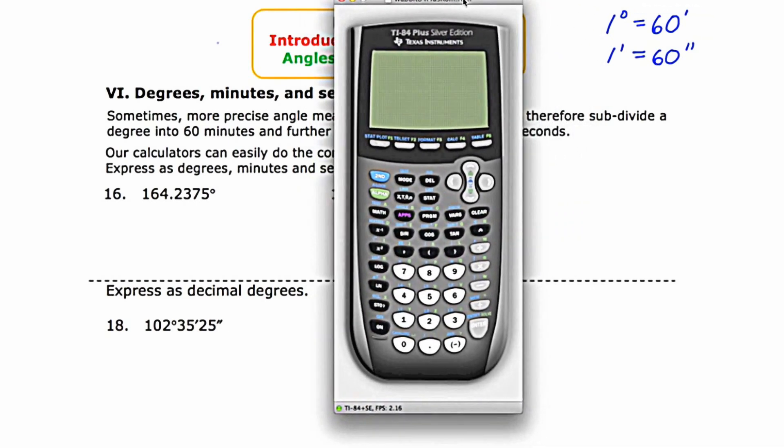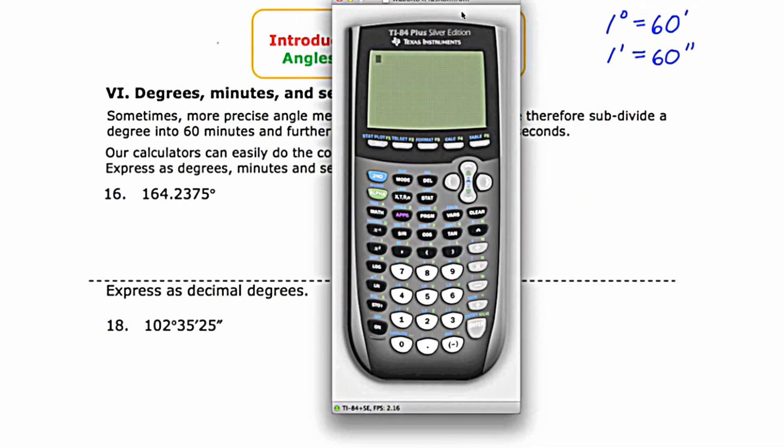For number 16, I want to take the angle 164.2375 and convert that to degrees, minutes, and seconds. This is pretty easy. I'm just going to type in 164.2375.